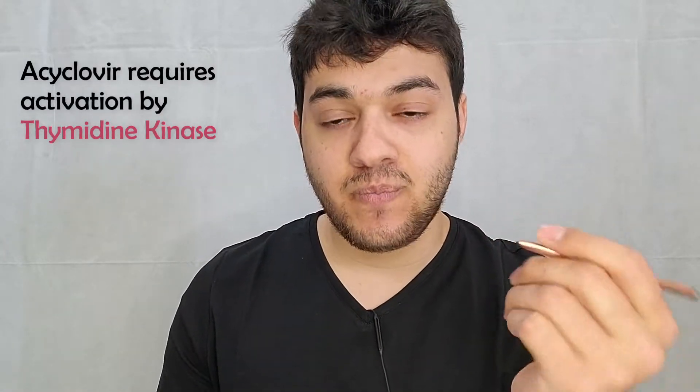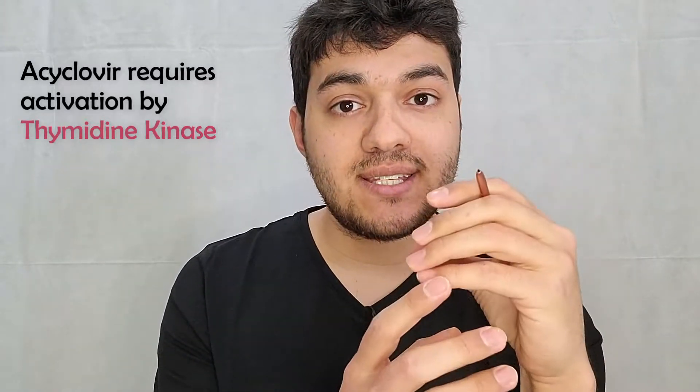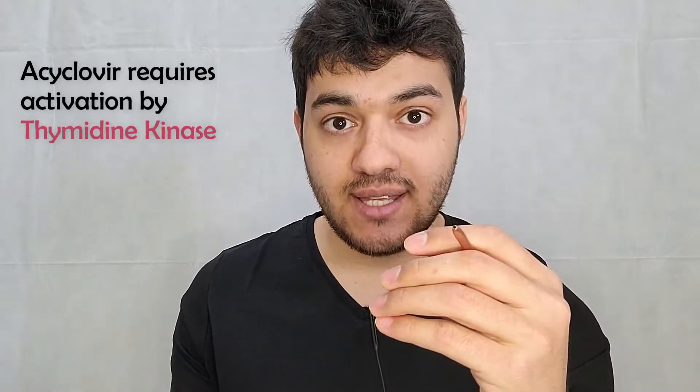A very important note — commonly tested on exams — is that once acyclovir enters the cell, it must be activated by a viral enzyme called thymidine kinase. The defective guanosine uses thymidine kinase to become activated, after which it is integrated by DNA polymerase to build defective viral DNA, resulting in viral death. Viruses can develop resistance by mutating their own thymidine kinase, changing its structure to block activation of acyclovir — this is the primary mechanism of resistance.